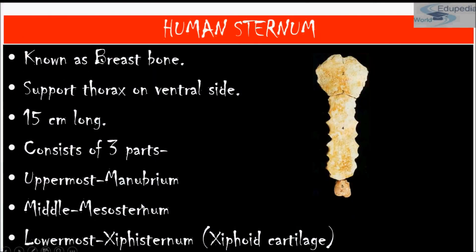The fourth category of the human axial skeleton is the sternum, also known as the breast bone. It supports the thorax on the ventral side and is around 15 centimeters long. It consists of three parts: the uppermost manubrium, the middle body called the mesosternum, and the lowermost xiphisternum, which consists of xiphoid cartilage.